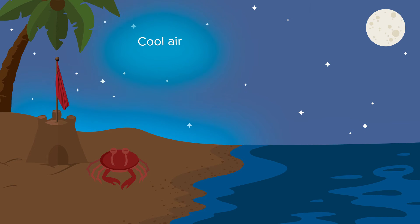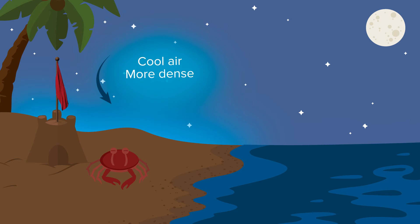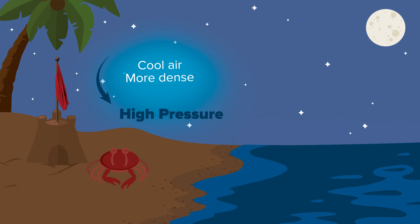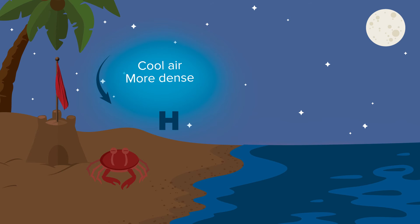Cool air, being more dense, presses down over the land, creating an area of high pressure. Meanwhile, because water cools down slowly, the air over the ocean is still warm.